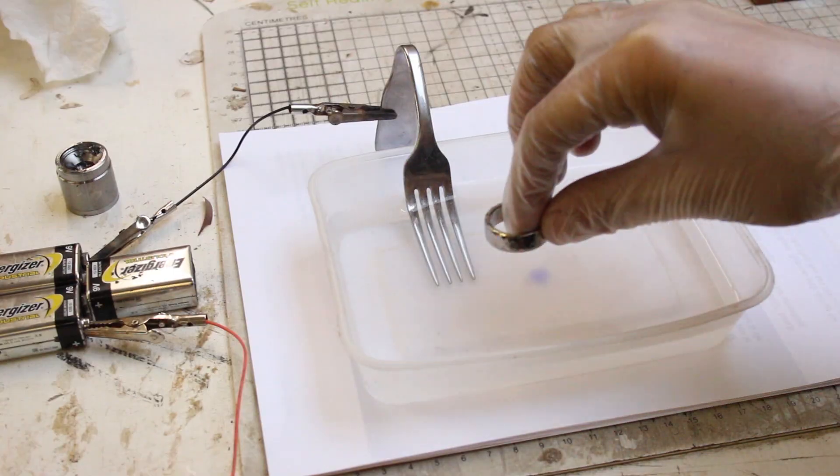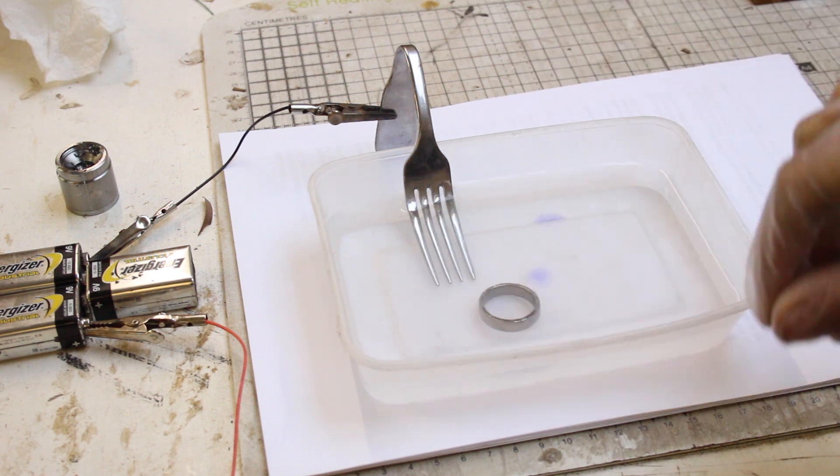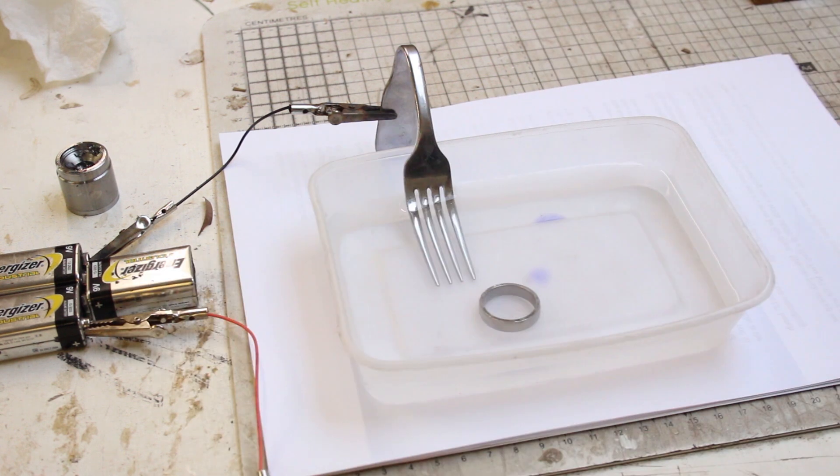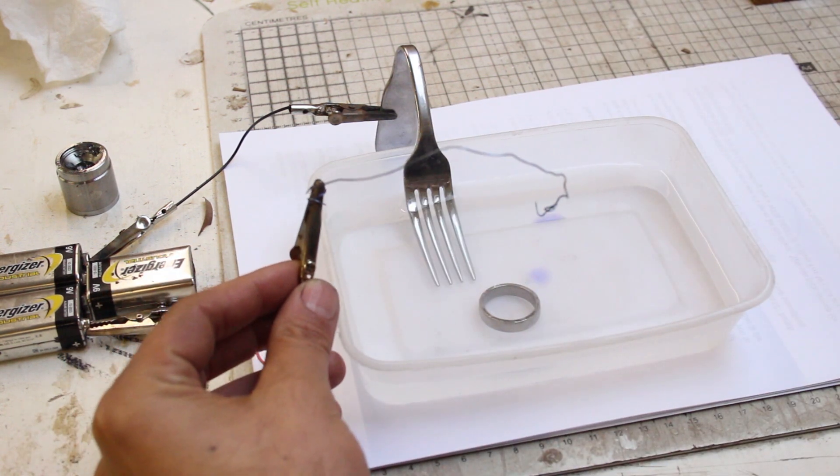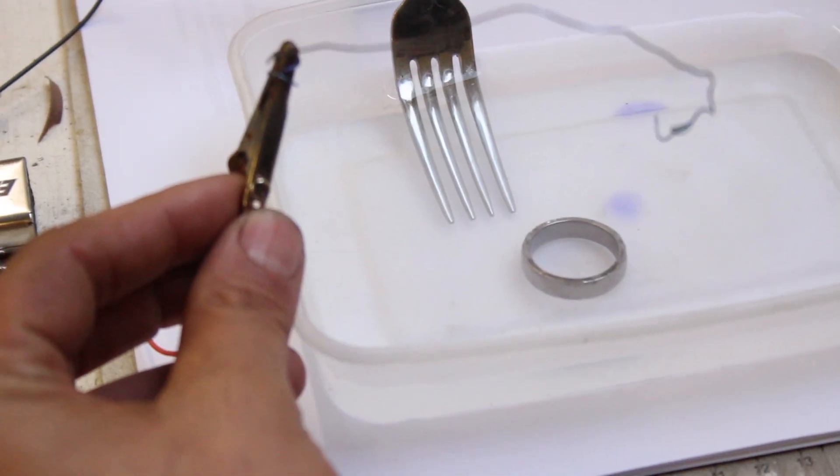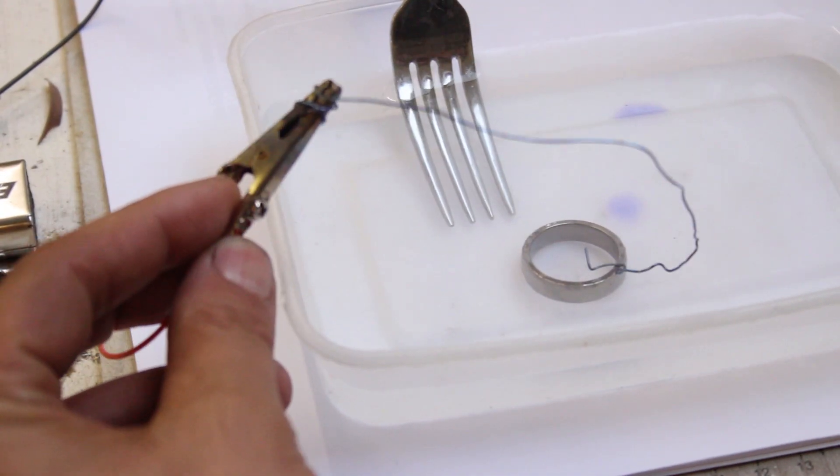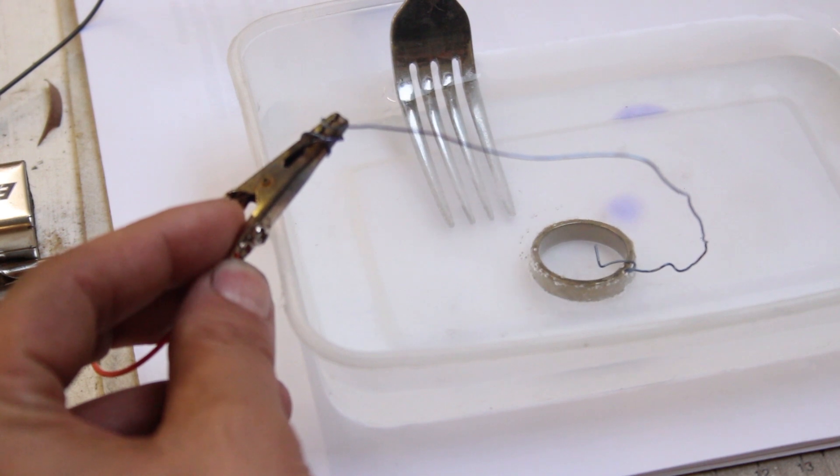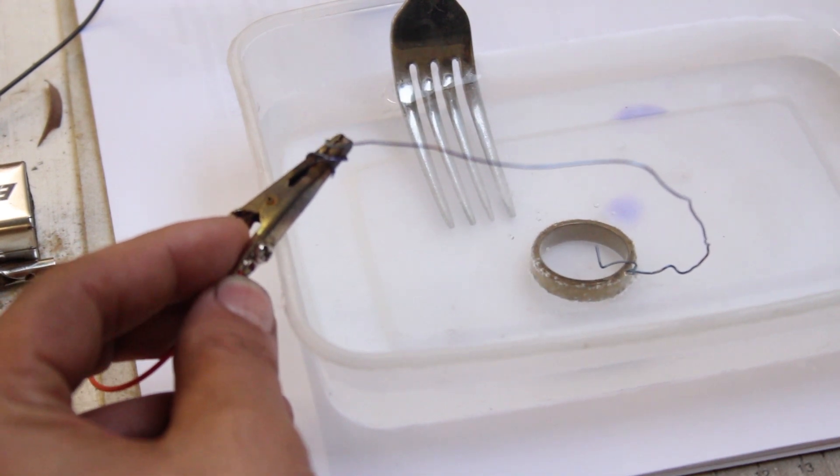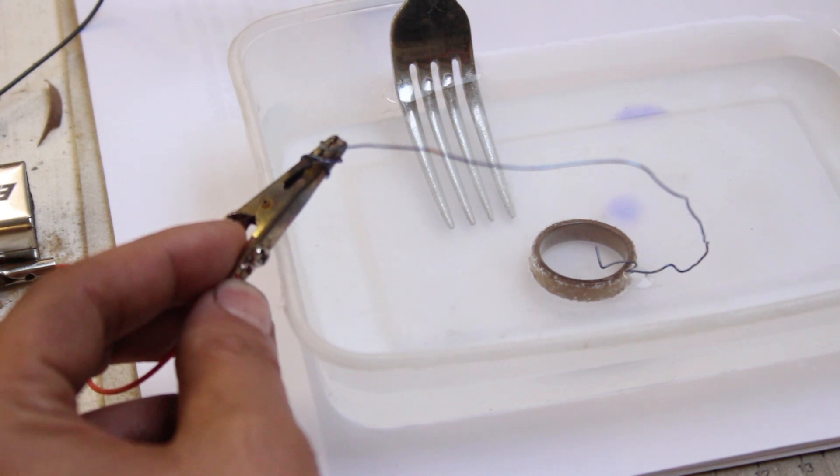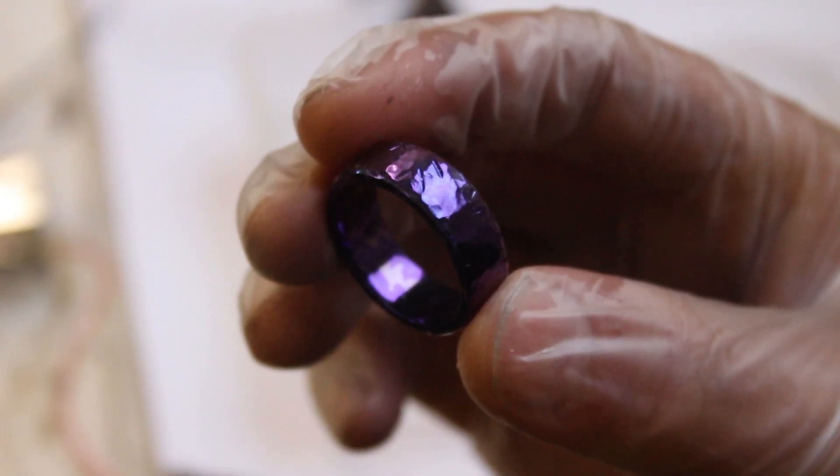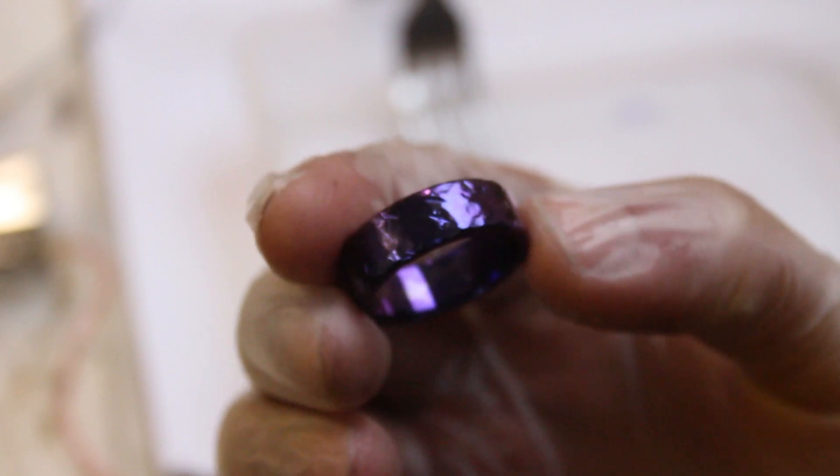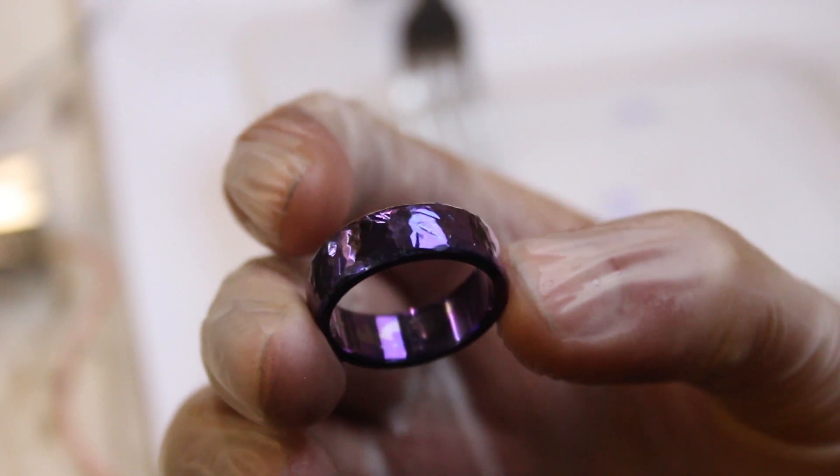So I set up my ghetto anodizer station which comprised of three 9 volt batteries, a fork and a bit of titanium wire. But basically I anodized the ring with three batteries first, which kind of brought it to kind of like a bluey purple. I thought it was a really cool color. This is the color which I initially wanted.